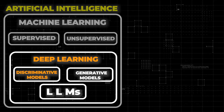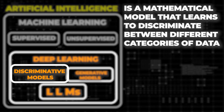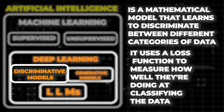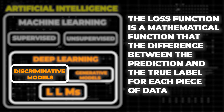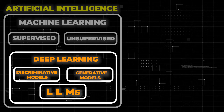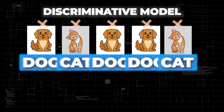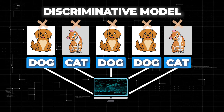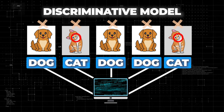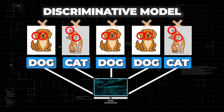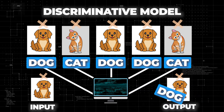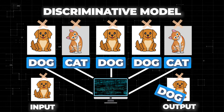Deep learning can be divided into three: discriminative models, generative models, and LLMs. A discriminative model is a mathematical model that learns to discriminate between different categories of data. It uses a loss function to measure how well it's doing at classifying the data. The loss function is a mathematical function that calculates the difference between the model's prediction and the true label for each piece of data. A simple example is a logistic regression model for classifying images as cats or dogs. The model learns to recognize features associated with each category, like whiskers and pointy ears for cats, and floppy ears and long noses for dogs. When given a new, unlabeled image, it uses the features it has learned to predict whether the image is a cat or a dog.